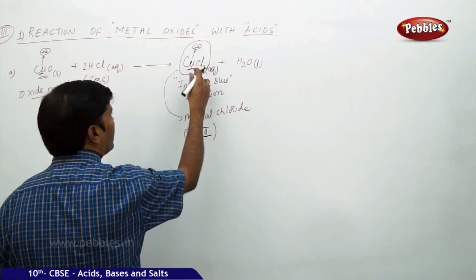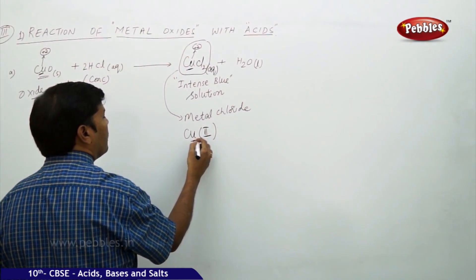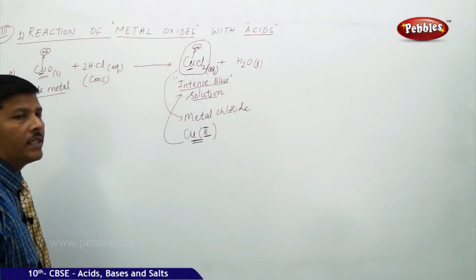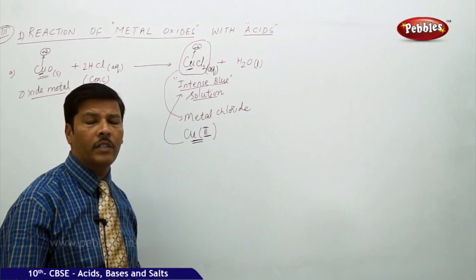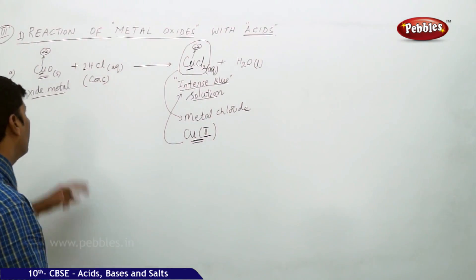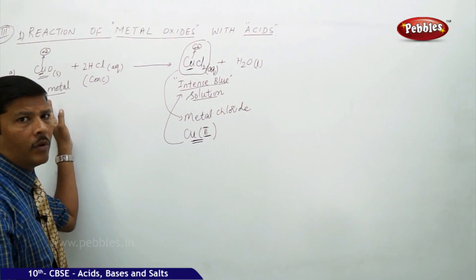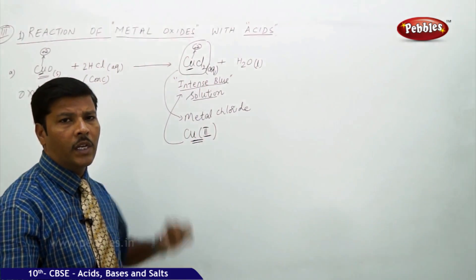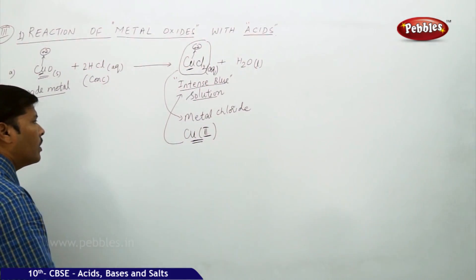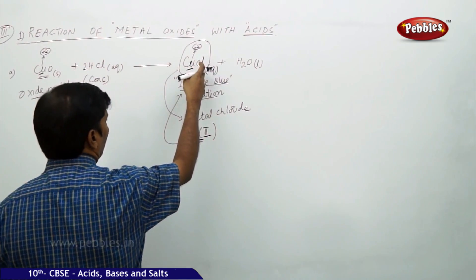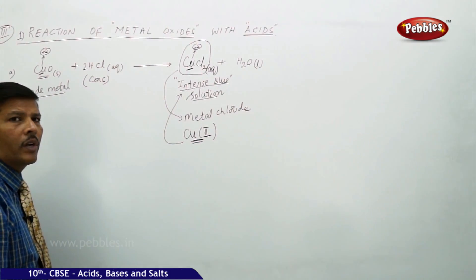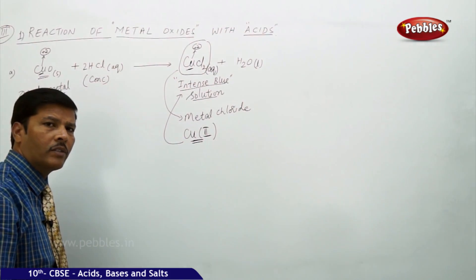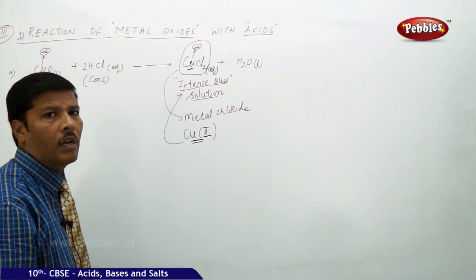The intense blue color formation in cupric chloride is because copper exists in the +2 oxidation state. There is a color change whenever metal oxides react with acids to form salts, because the nature of the compound changes — the metal oxide is converted to a metal chloride. Metal chloride can ionize faster than metal oxide, giving chloride ions and cupric ions, and because of the ionic formation of copper in the +2 state.